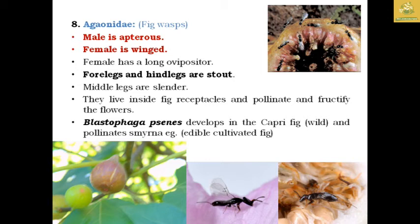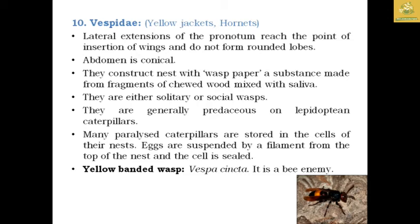The family Vespidae contains yellow jackets and hornets. The yellow-banded wasp is known as the honeybee's enemy — an important predator and destroyer of honeybee combs. A single yellow-banded wasp can destroy or eat up to 100 honeybees per day, decreasing honeybee production. They are solitary as well as social wasps, mainly predacious on lepidopteran caterpillars. Eggs are suspended by a filament from the top of the nest cell.